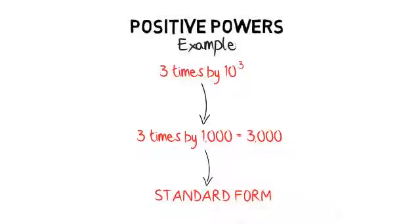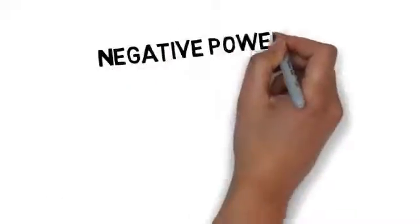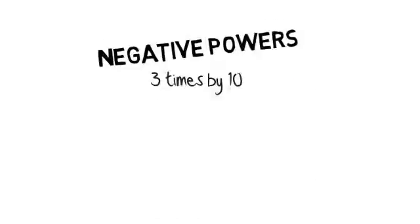Next, let's move on to negative powers. 3 times 10 to the power of minus 4. This means we have to add a decimal point to the end of the 3 and move back four spaces so that we get 0.0003.